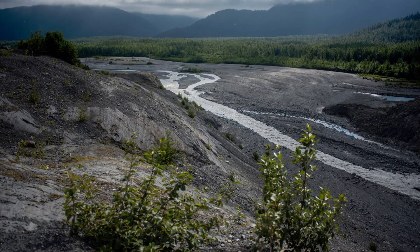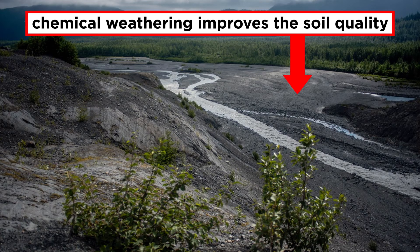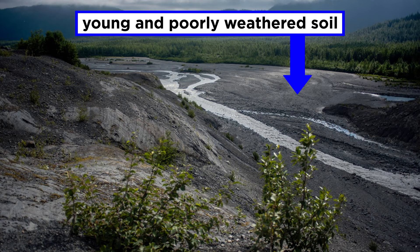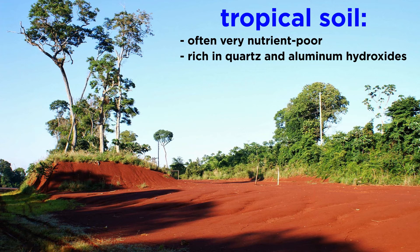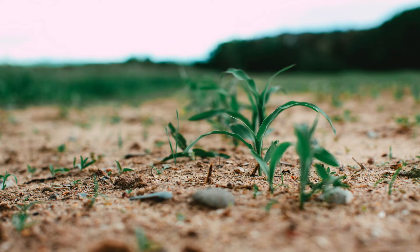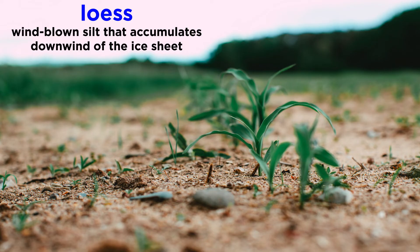Glacial sediments generally make poor soils since they are hard and compacted, poorly chemically weathered, and composed primarily of unsorted rocky sediments. Chemical weathering helps make a good soil since it helps soften and break up rocks, and leaches important nutrients from minerals, incorporating them into soil-poor waters, and since glacial sediment is young and exists in cold environments, it is not very weathered. Of course, there can be too much of a good thing, since many tropical soils have had all their nutrients removed, leaving behind mainly quartz and aluminum hydroxides. There are some glacial deposits that make fertile soil. One of them is called loess, which is wind-blown silt that accumulates downwind of the ice sheet.